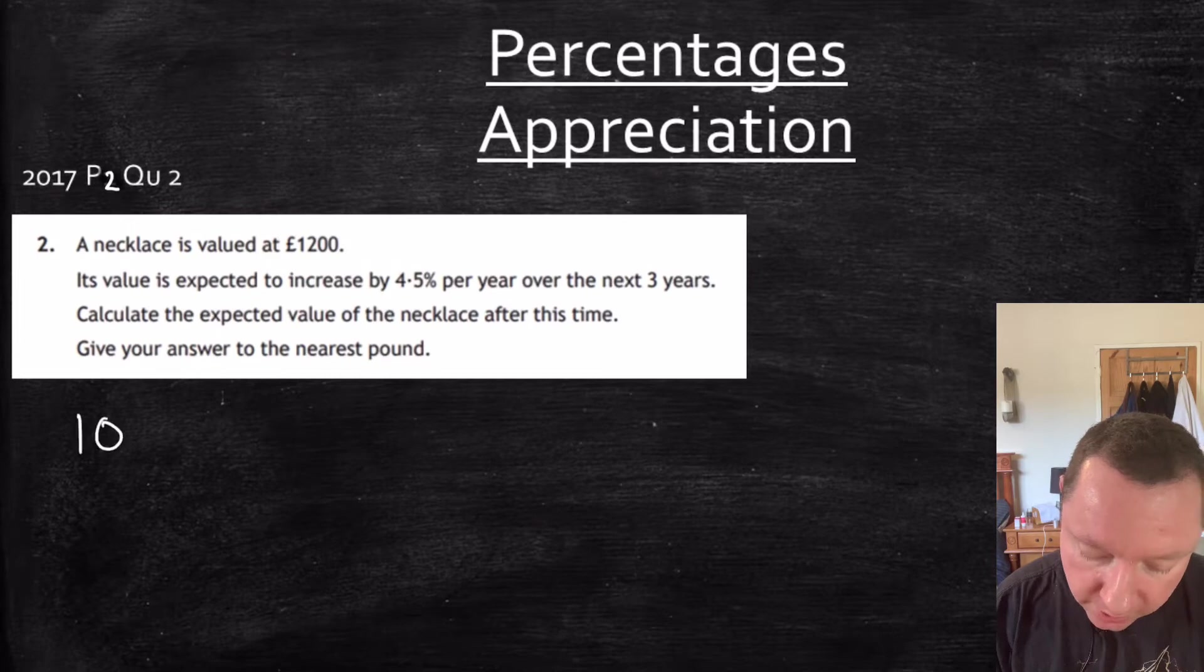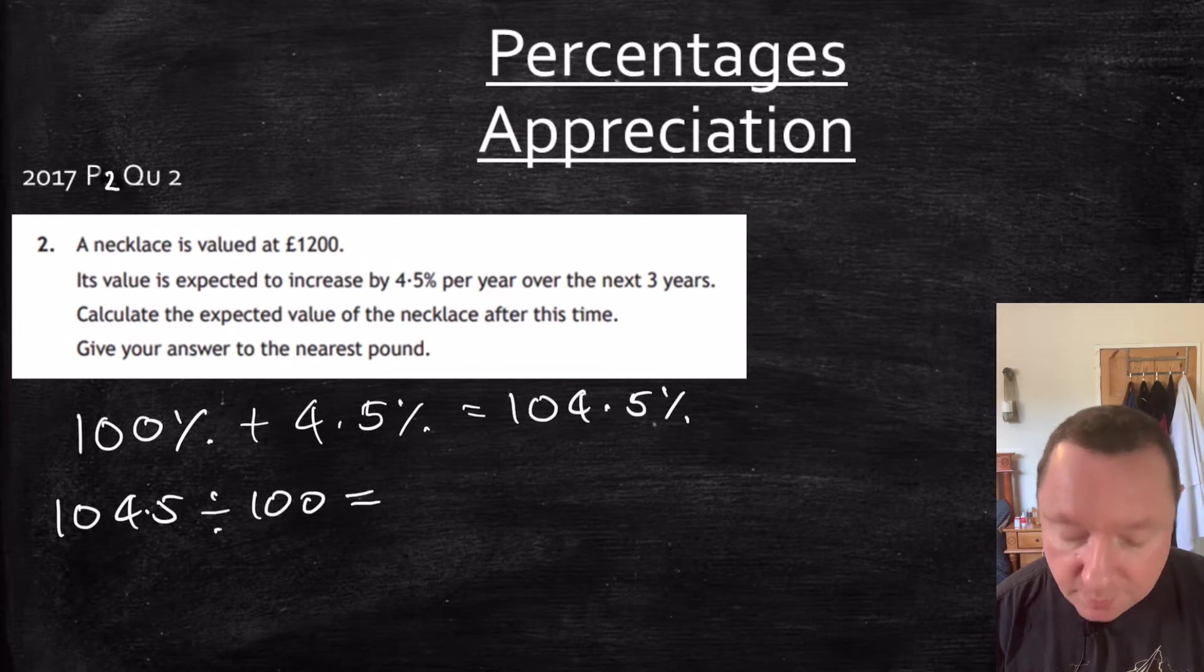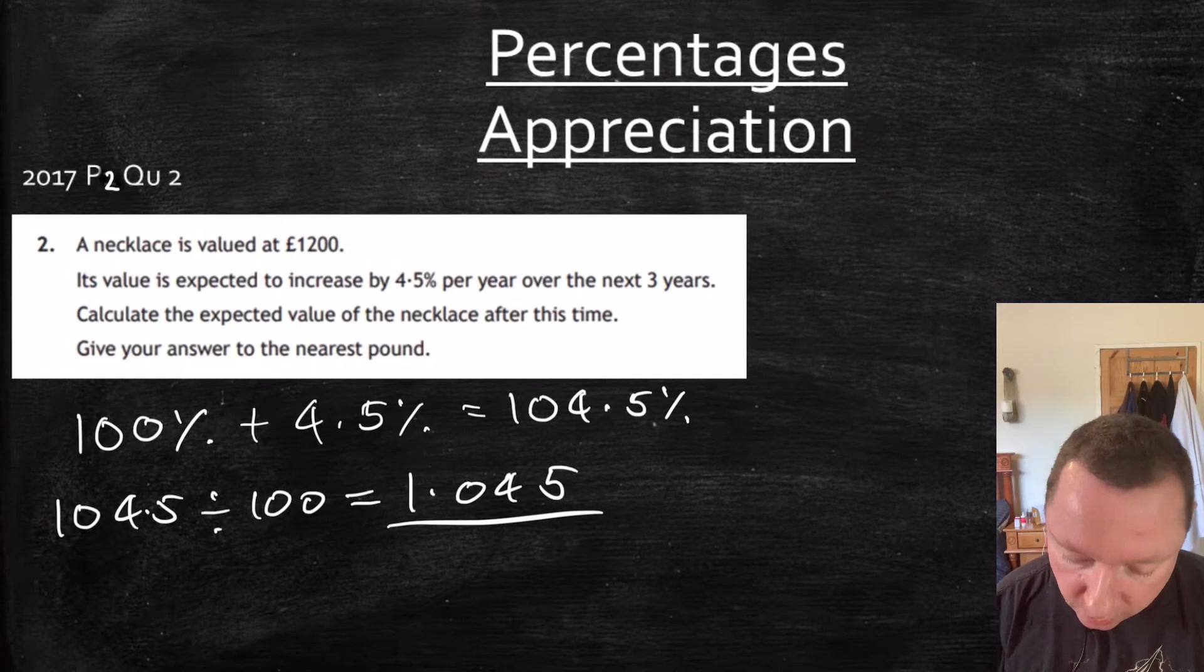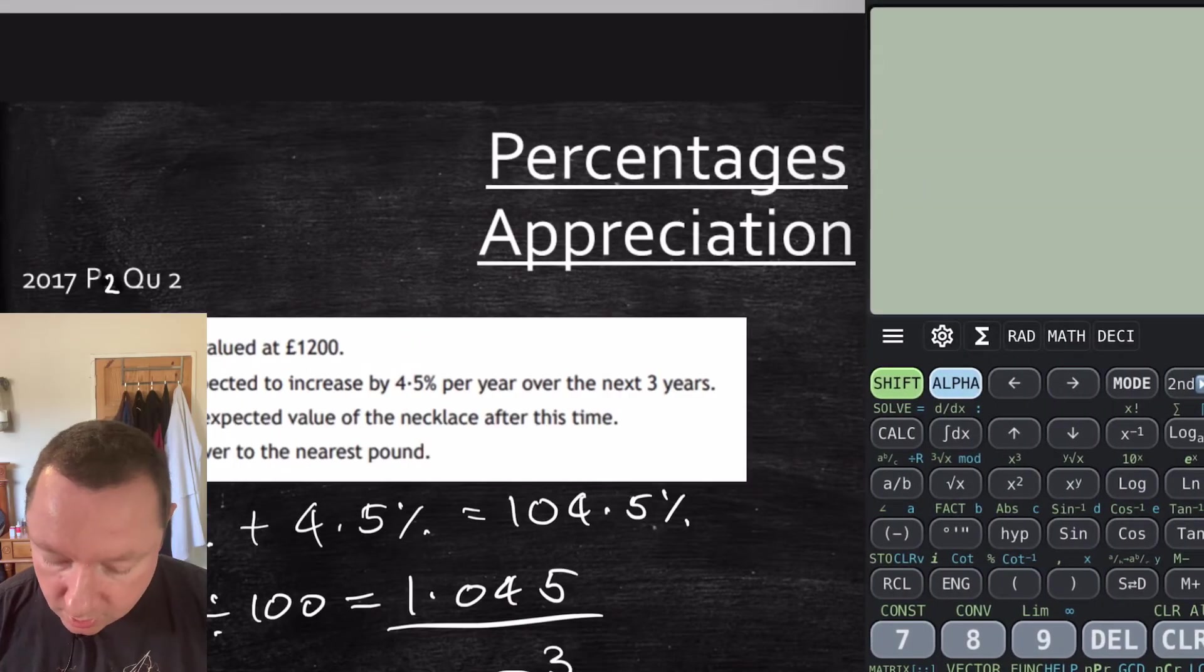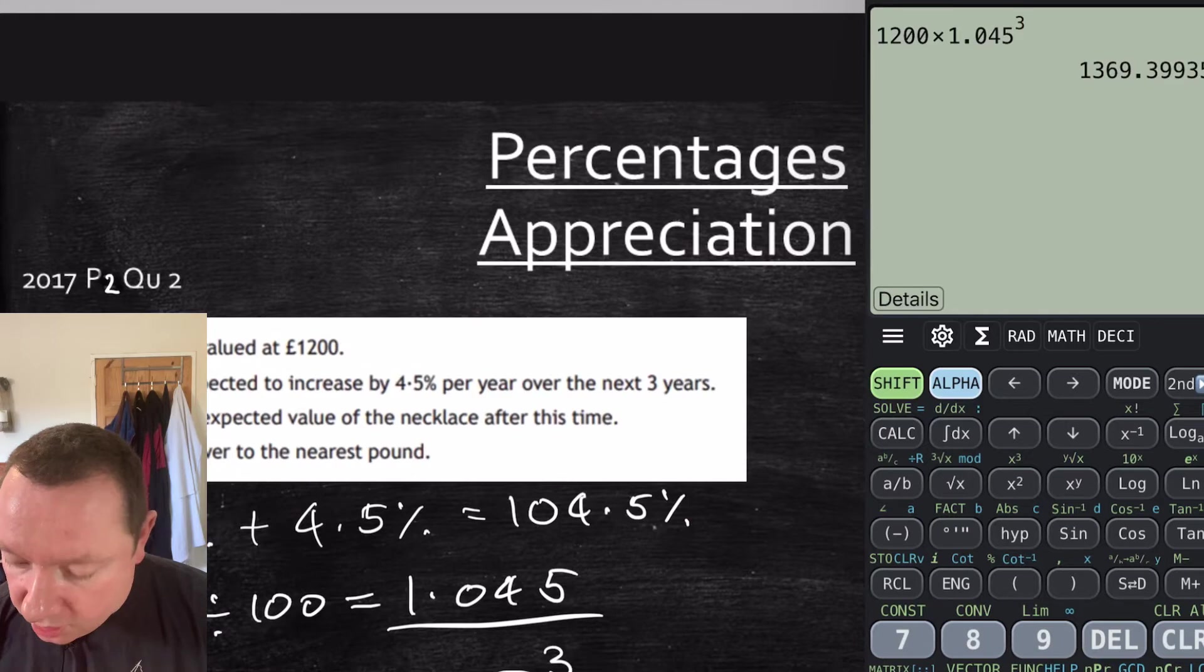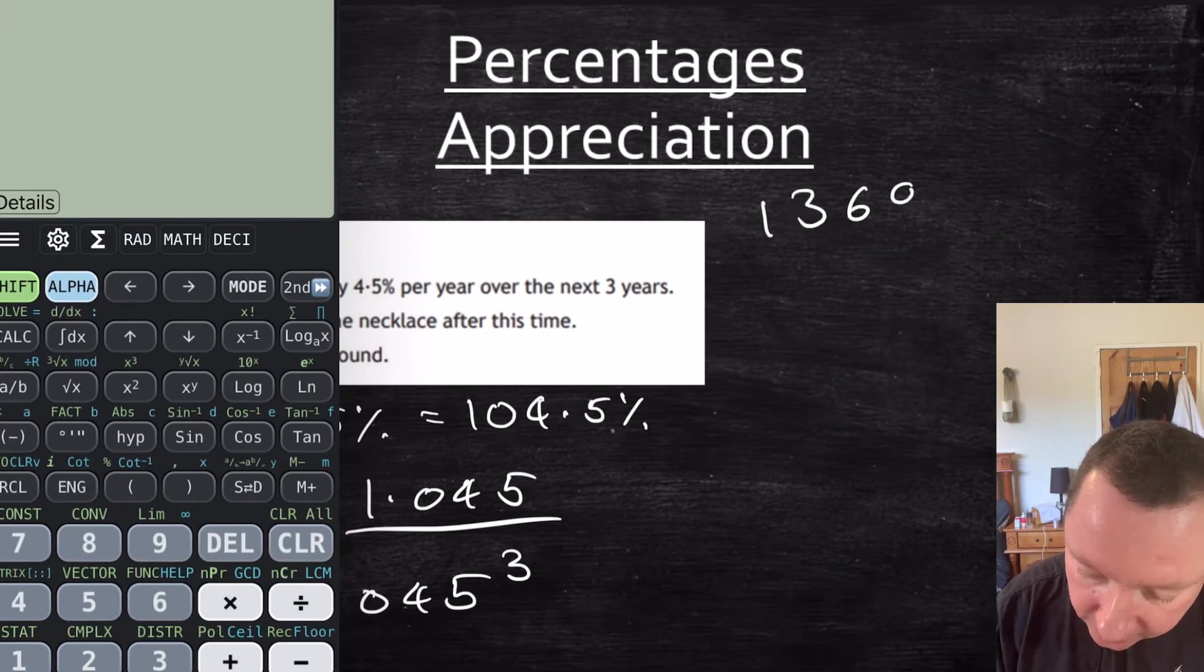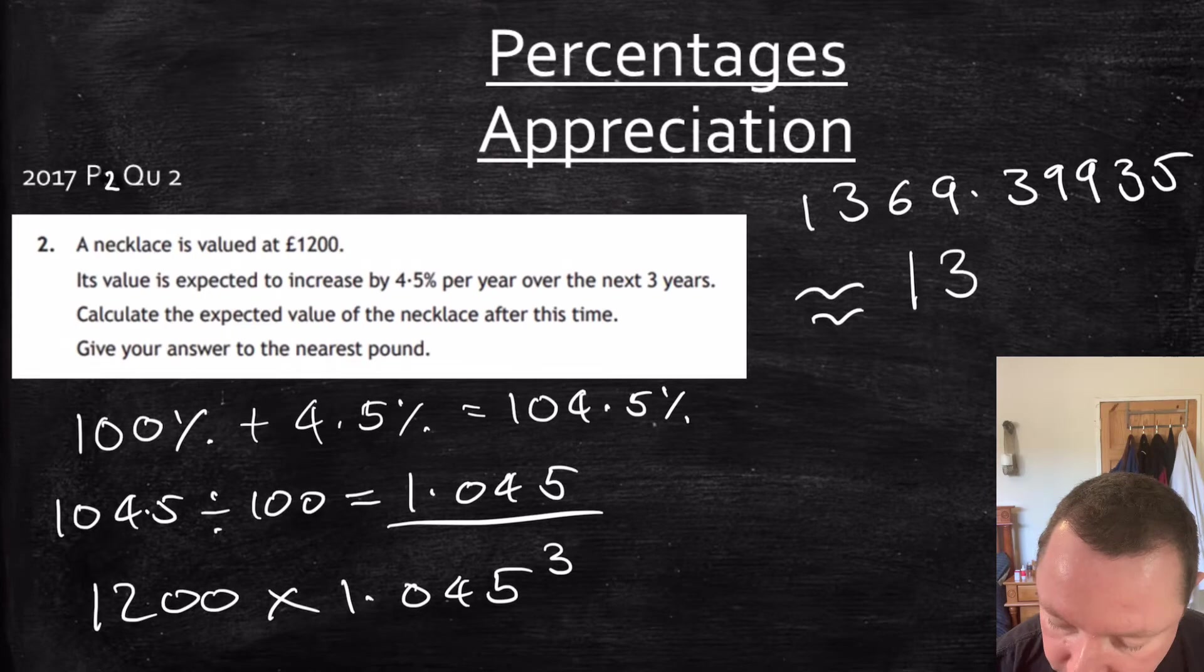100% plus 4.5%. That's 104.5%. Change that to a decimal by dividing by 100. And this time I won't use a calculator. It's 1.045. There's my key number. Use a calculator just to be sure. So then we take the money. 1,200 times the multiplier to the power of the time, which is 3. So there we definitely need a calculator. 1,200 times 1.045 to the power of 3 is 1,369.39935. Let's just write that whole thing down. 1,369.39935, which equals to the nearest pound, 1,369 pounds.